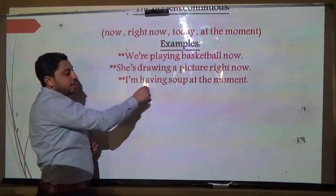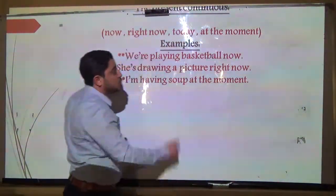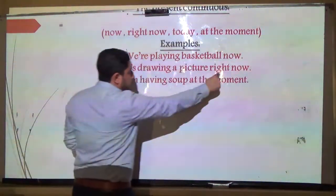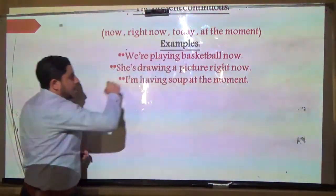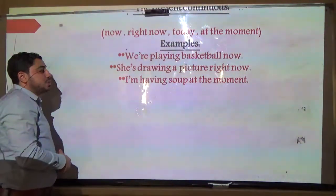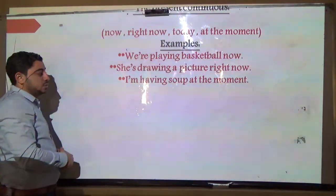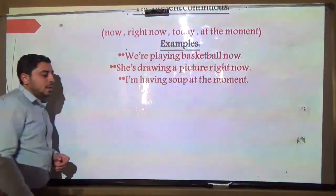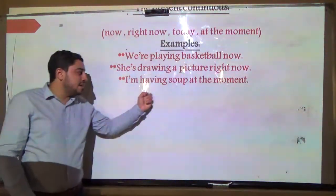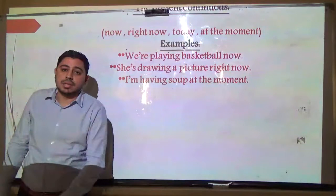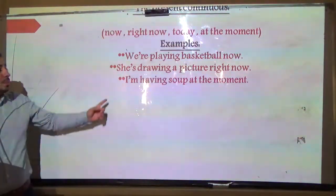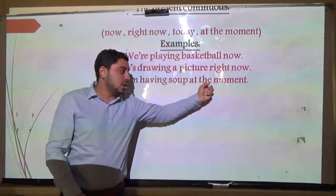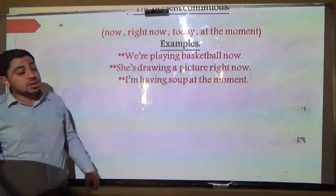Number two: 'She is drawing a picture right now' — using 'right now' as the time marker with 'is drawing.' Another example: 'I am having...' with 'at the moment' as the time marker of the present continuous.